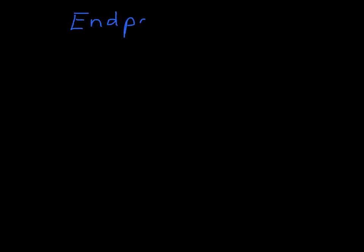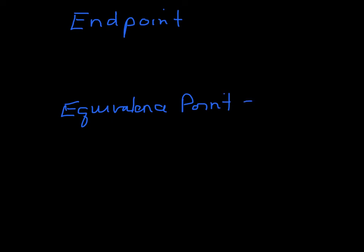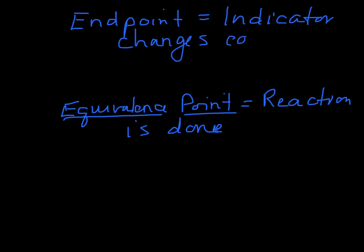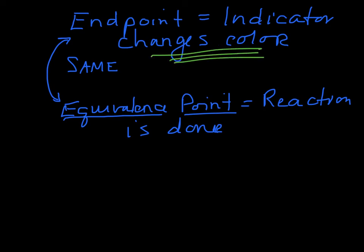There are a couple of important terms. The equivalence point is when the reaction is exactly done — in this case, when we've added exactly the same number of moles of NaOH and HCl. The end point is when the indicator changes color. Ideally, we want the end point and the equivalence point to be the same — we want the indicator to change color exactly when the reaction is done — and this can happen as long as you choose the right indicator.